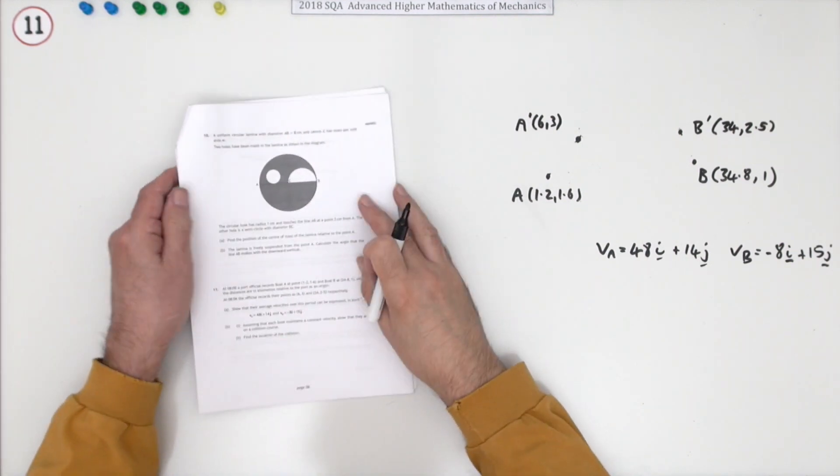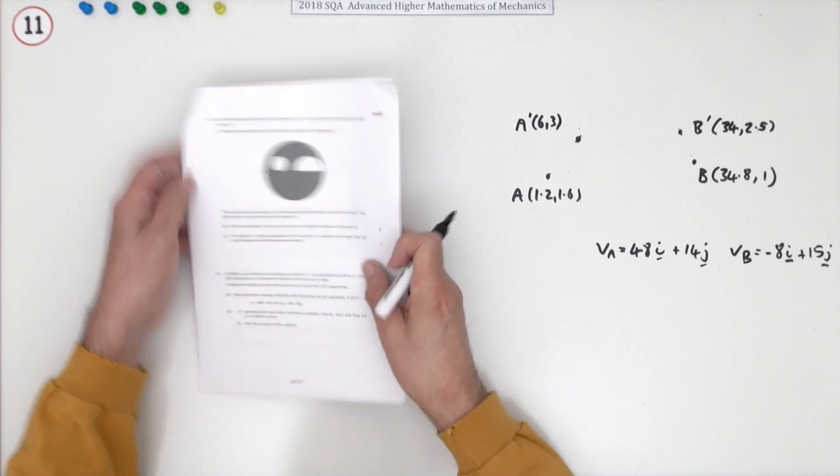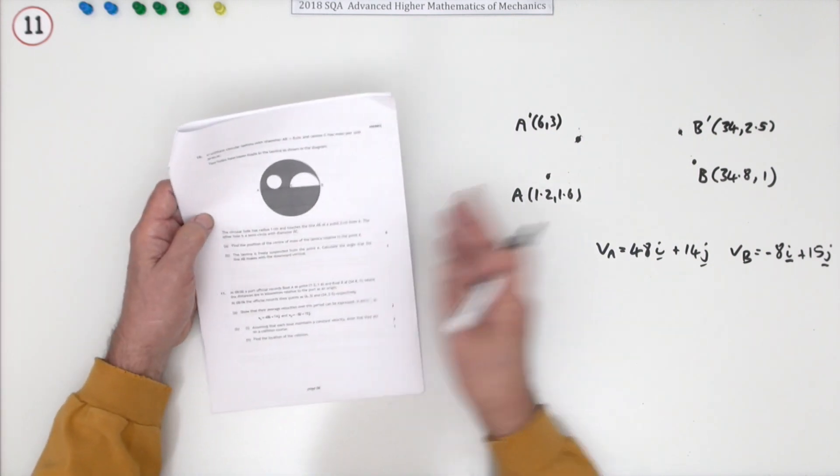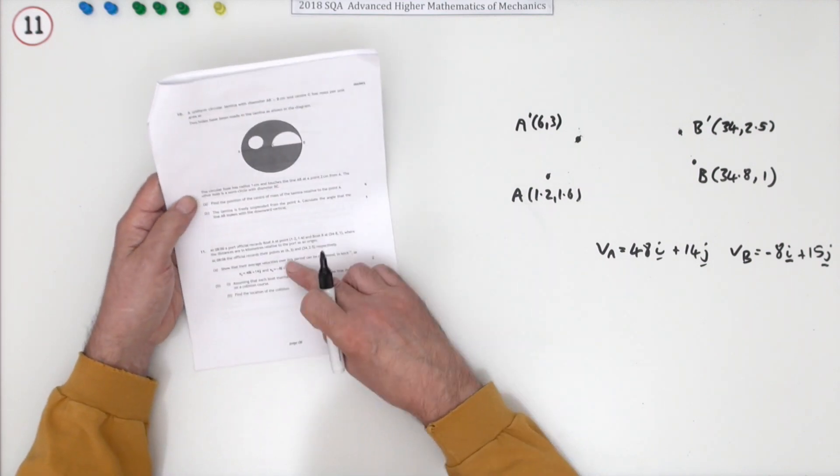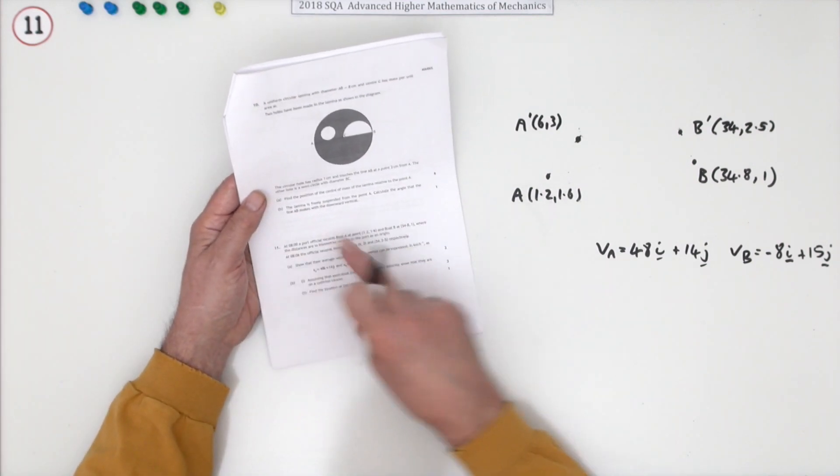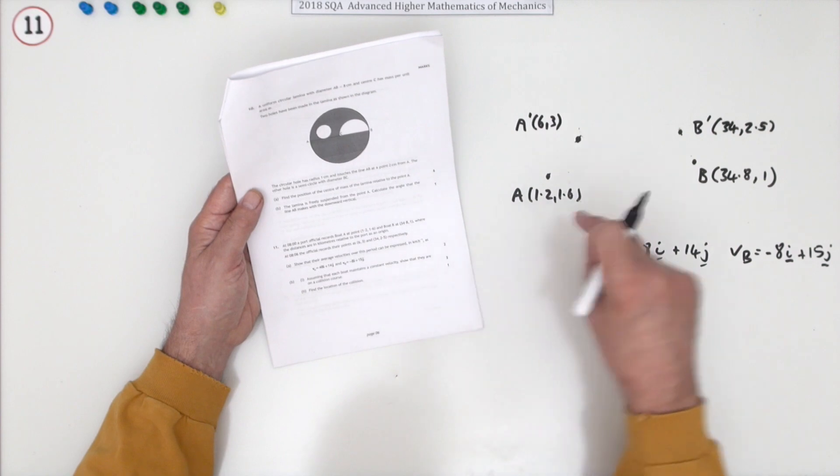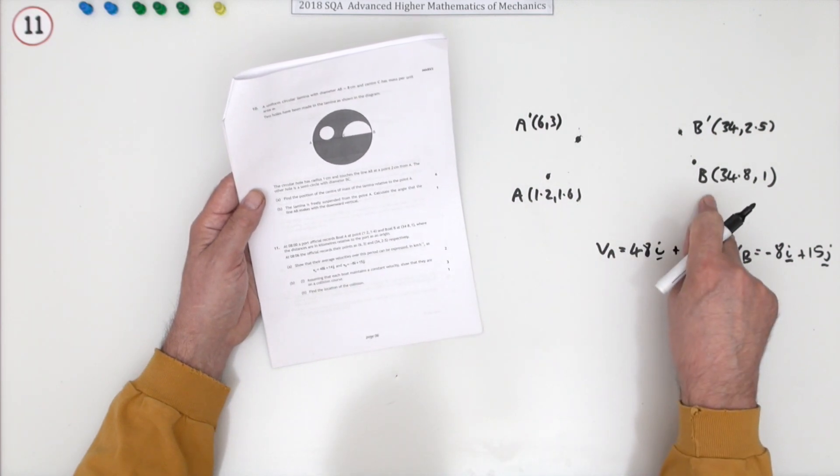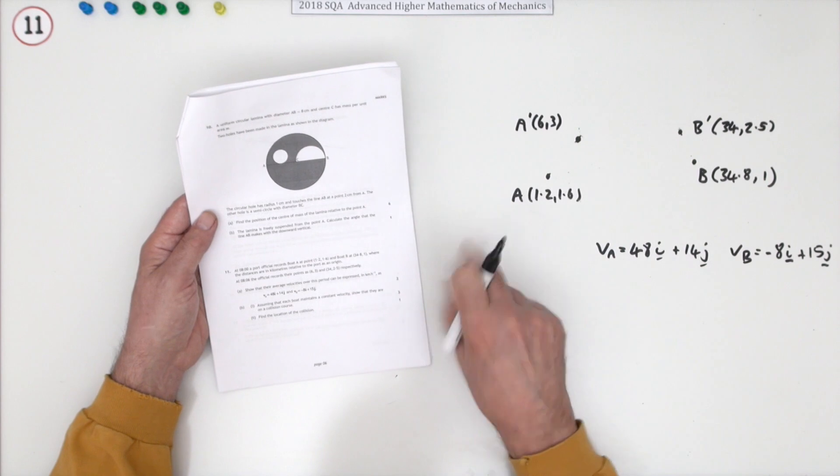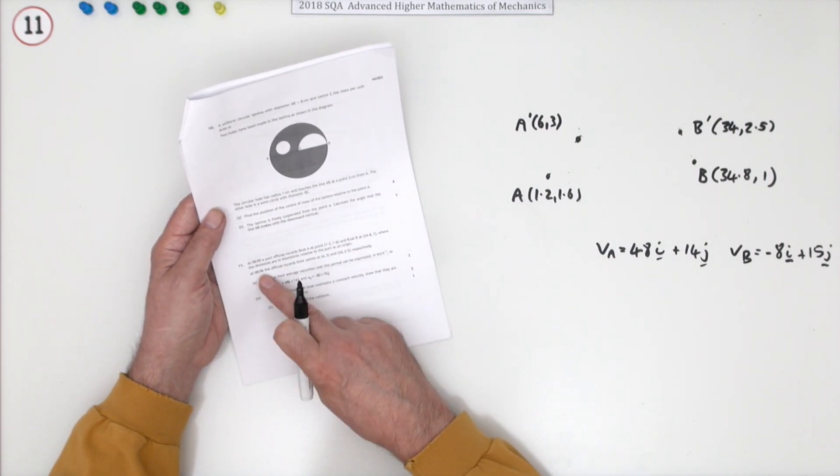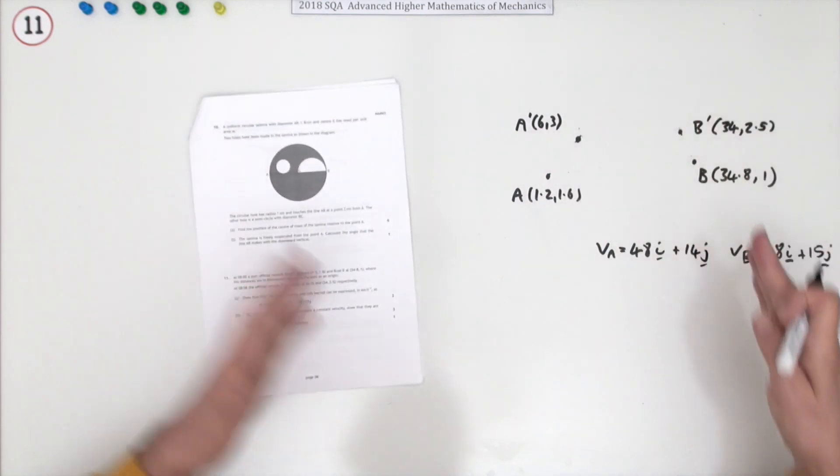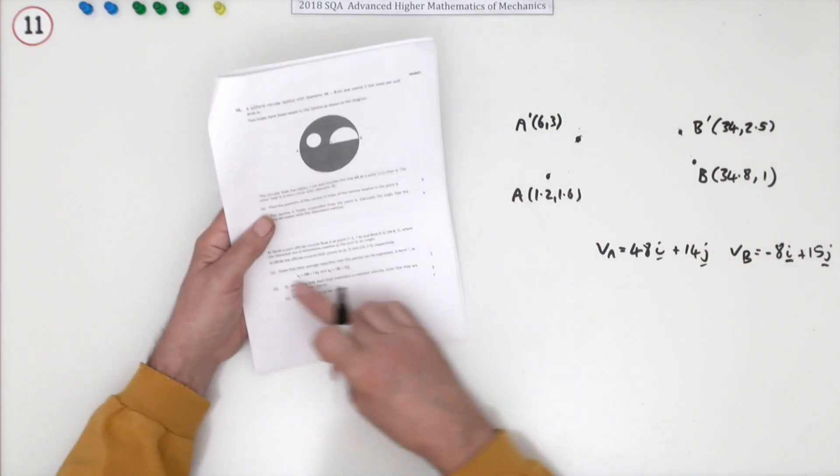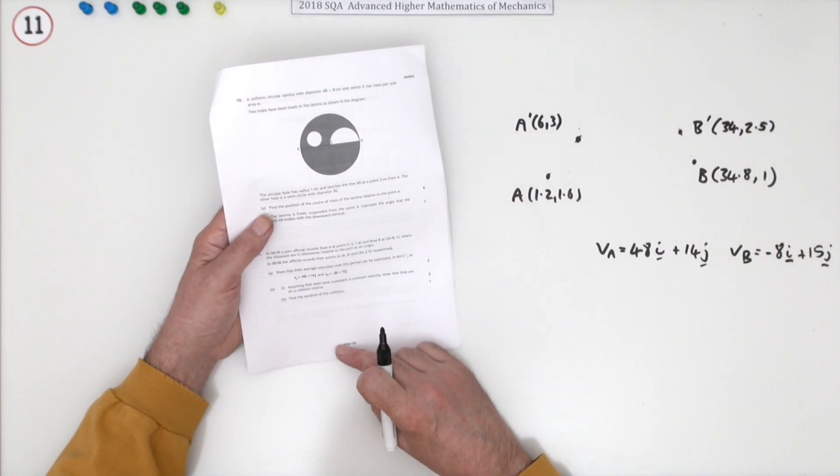Number 11 from the 2018 SQA Advanced Higher Mathematics of Mechanics, a 6 mark question in three parts on vectors and relative motions. At a certain time, 08:00 hours, boat A is at this position and boat B is at this position relative to some port as the origin. Six minutes later at 08:06, the positions are here. They seem to be heading towards each other.